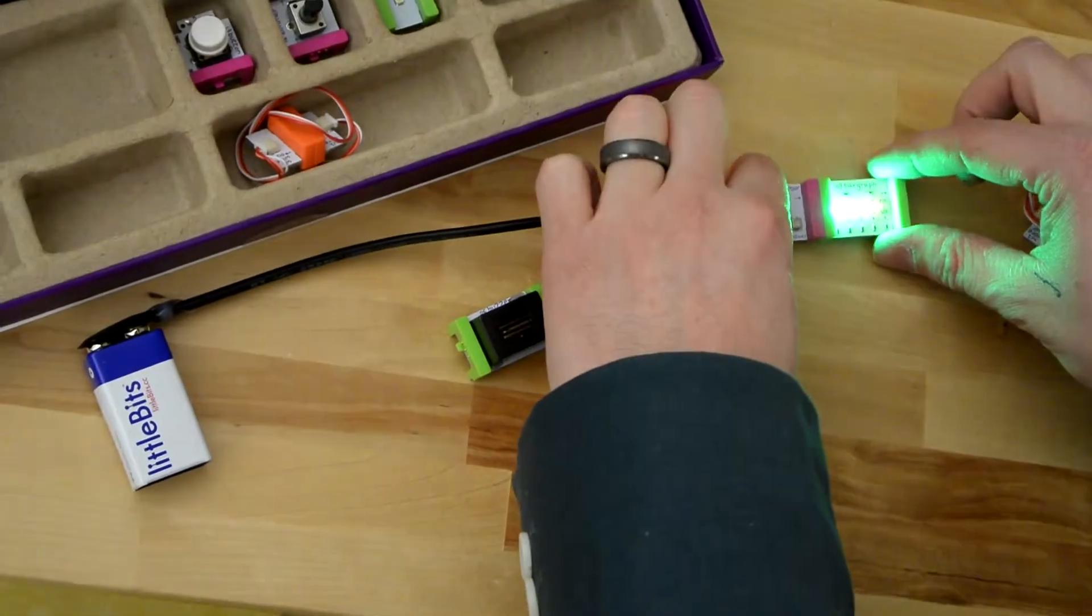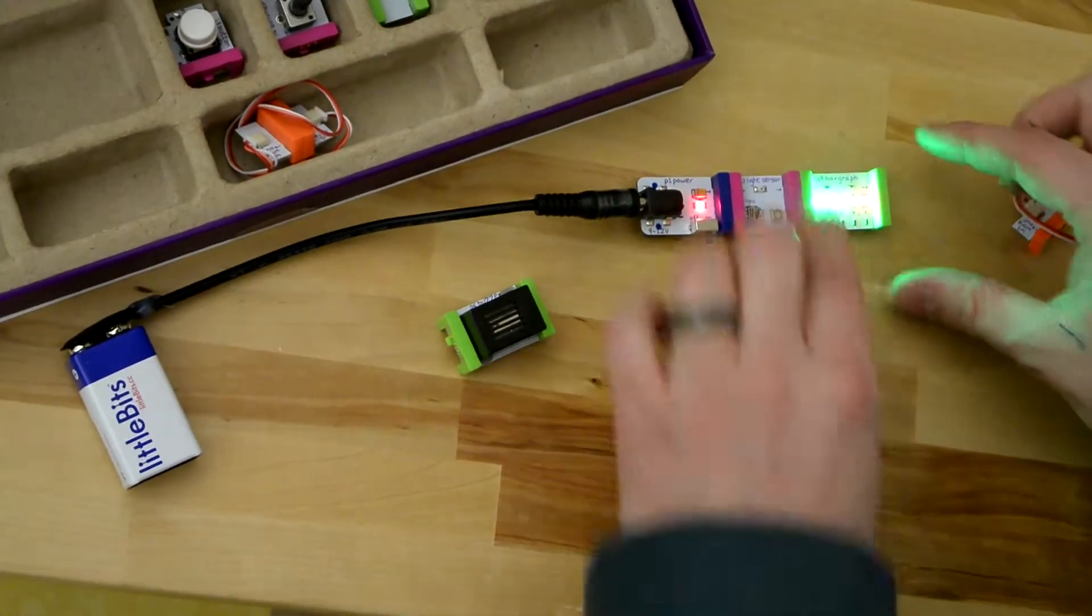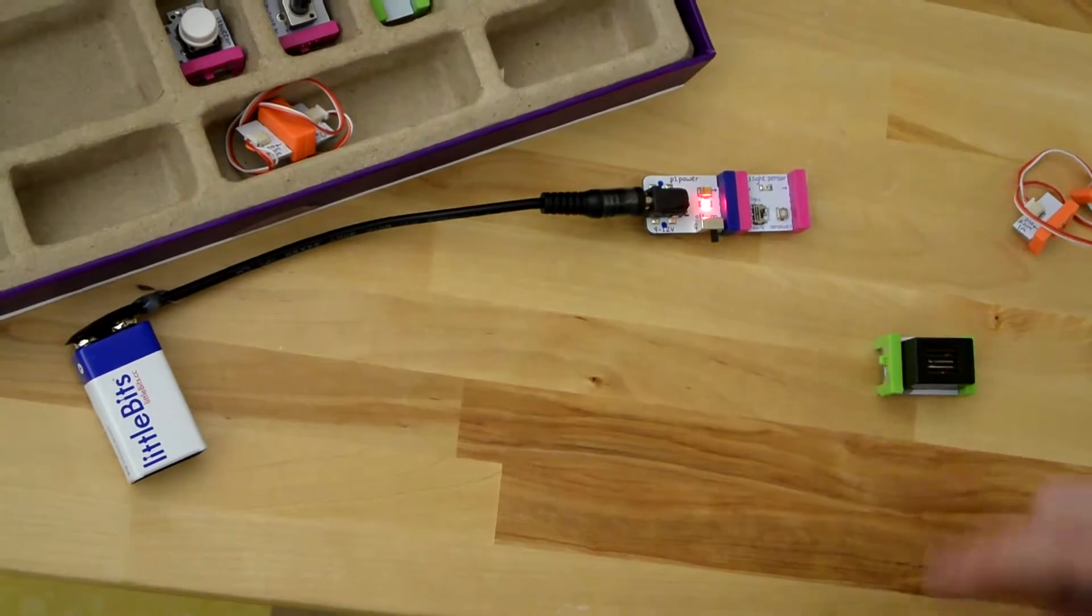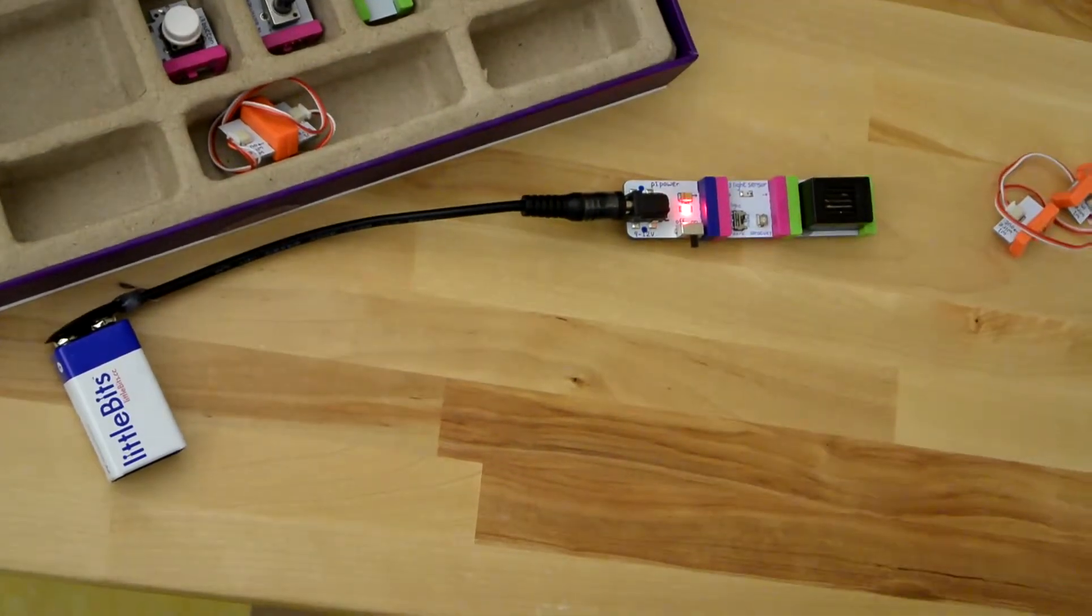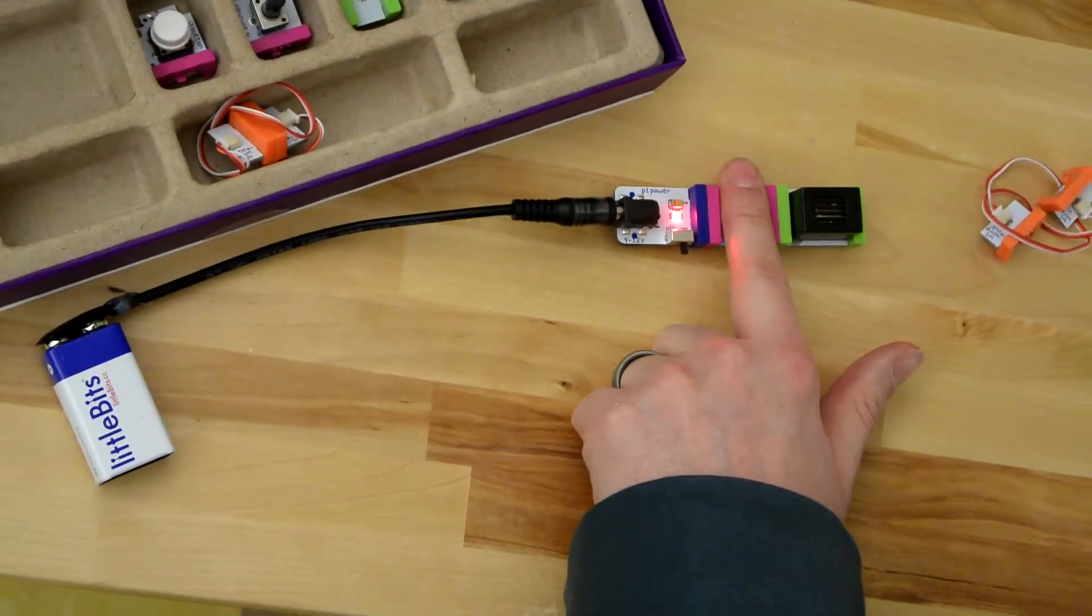Now we can easily swap out without turning the circuit off. Swap out the bar graph and swap in the buzzer. Are you ready for this? Wow, that's annoying.